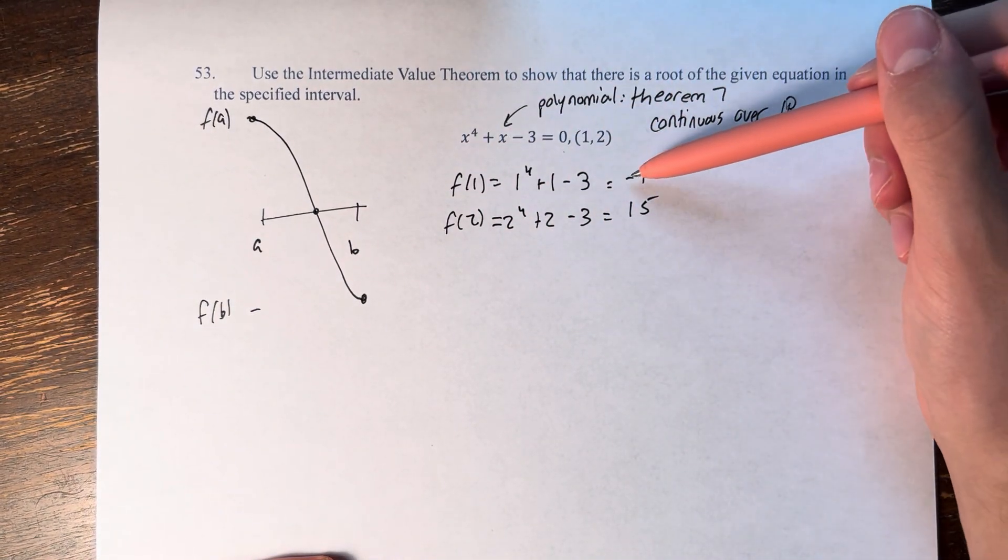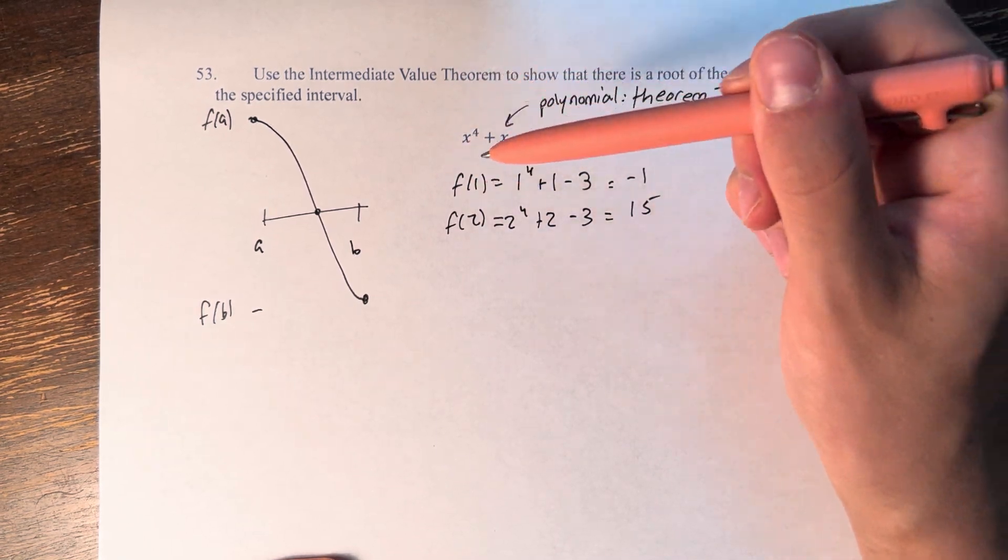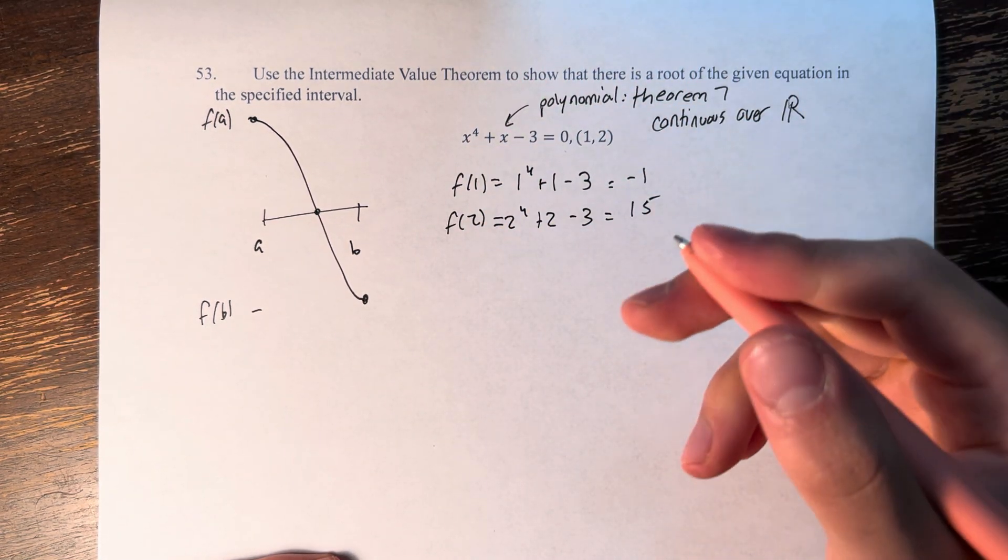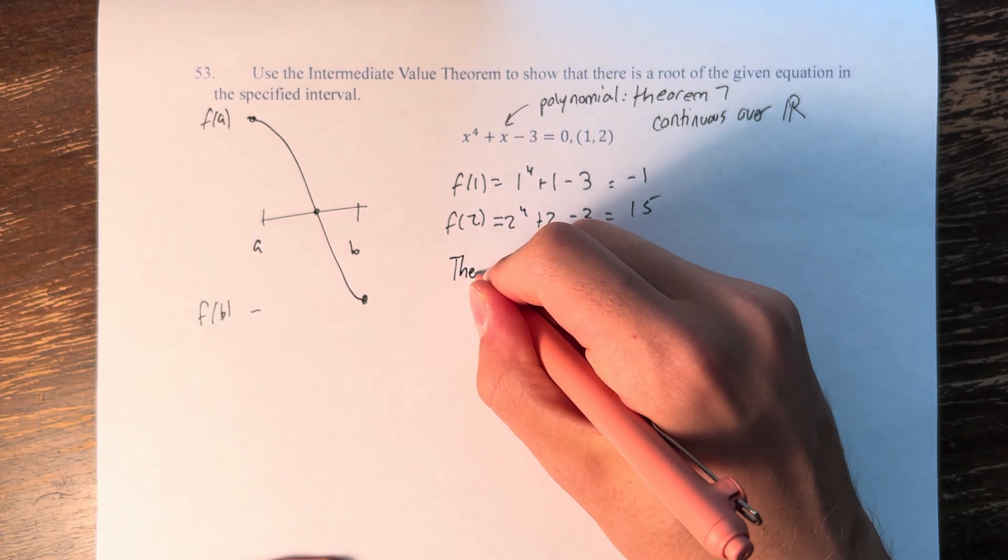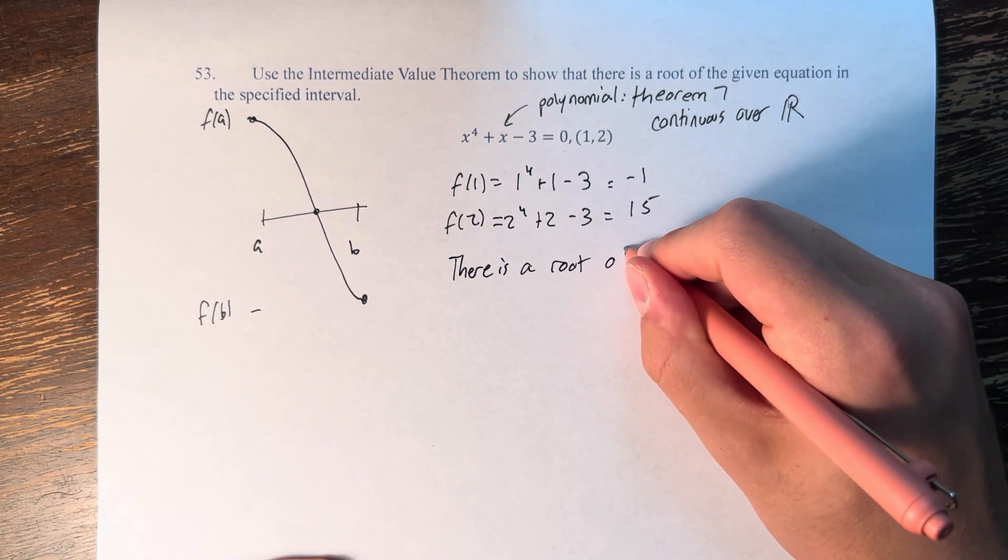since f of 1 is negative and f of 2 is positive, and the function is continuous over the interval from 1 to 2,